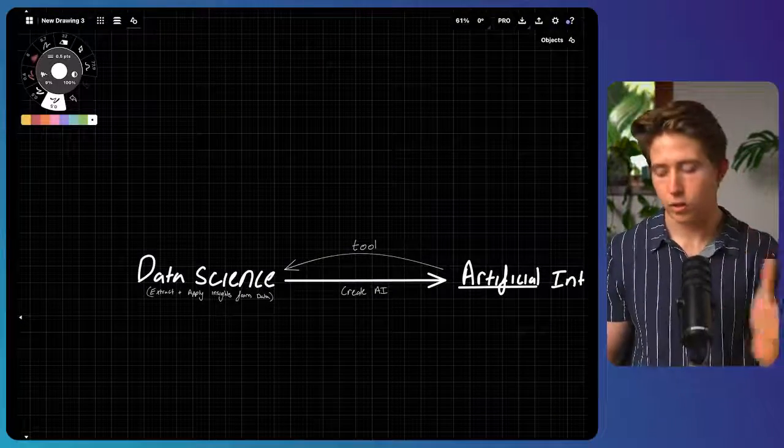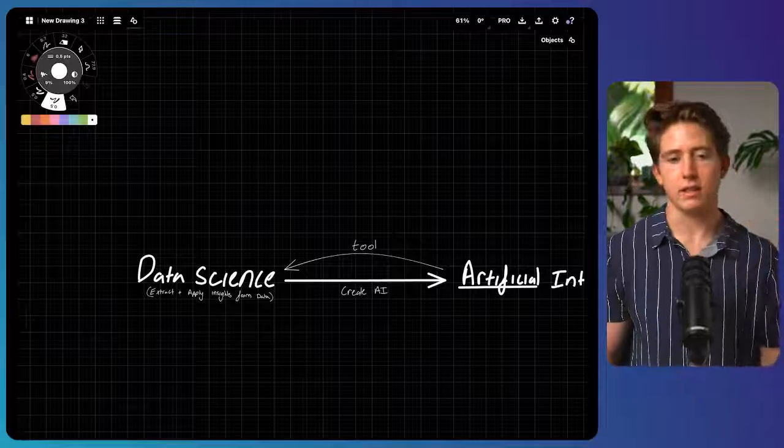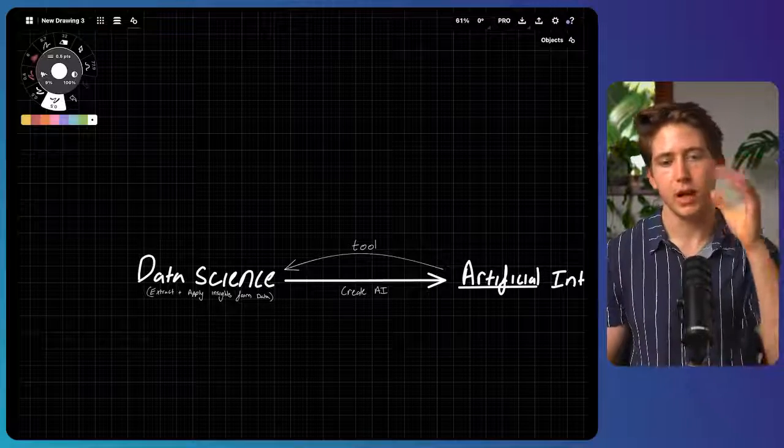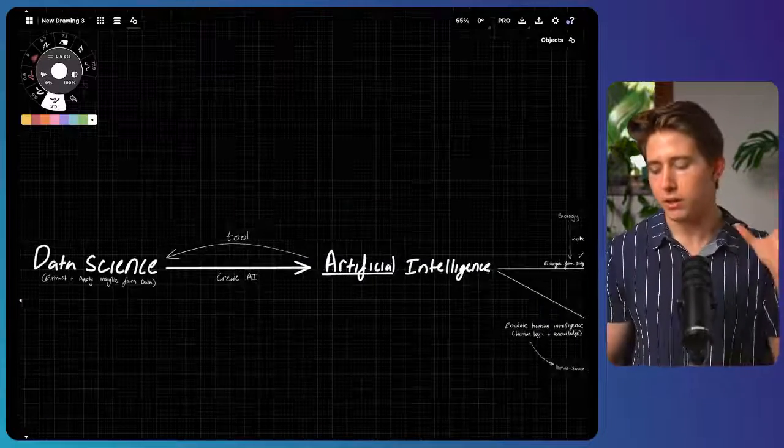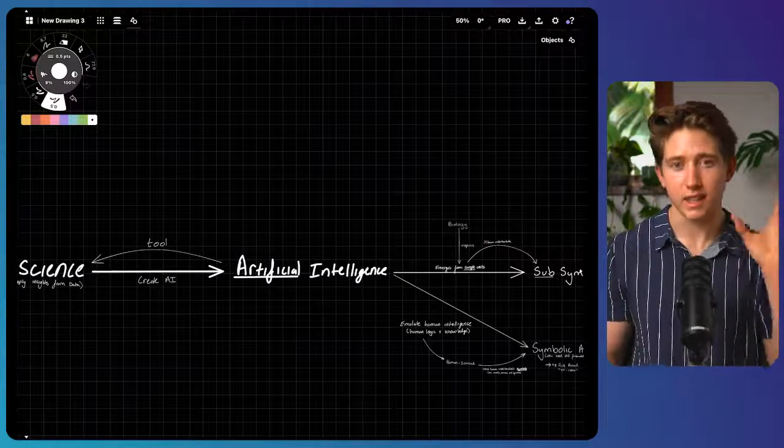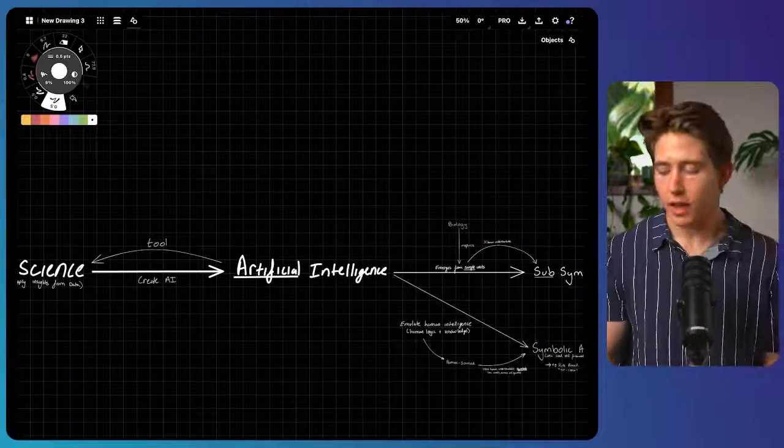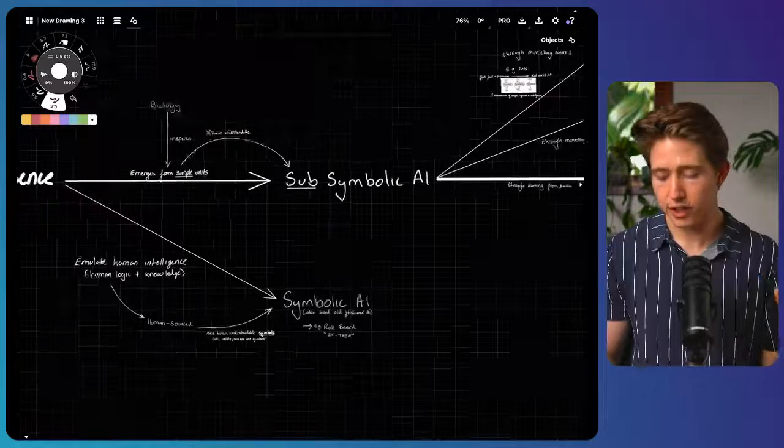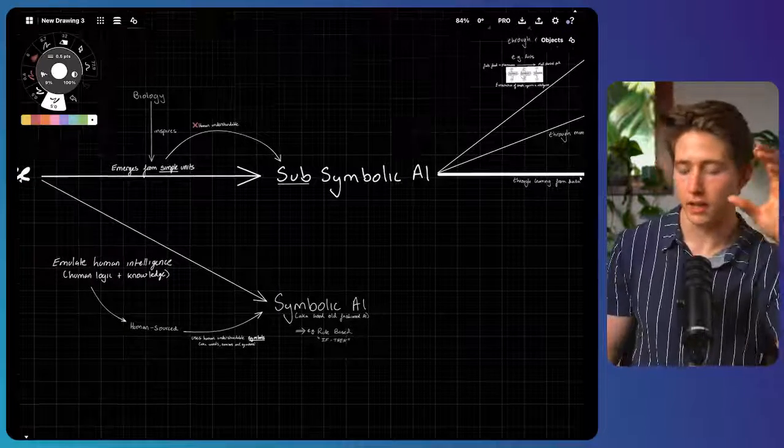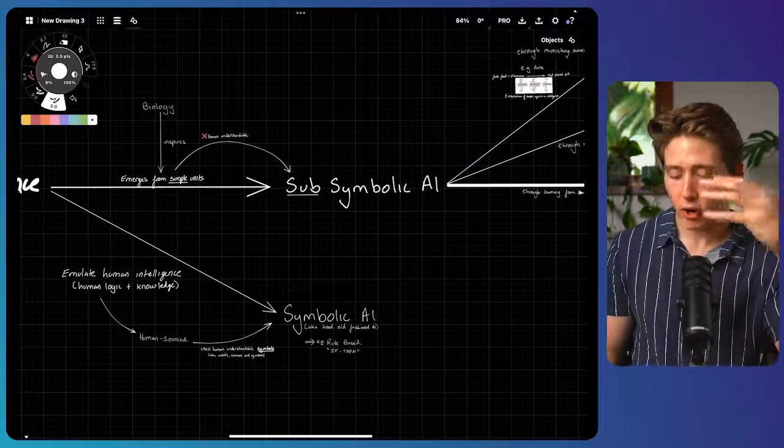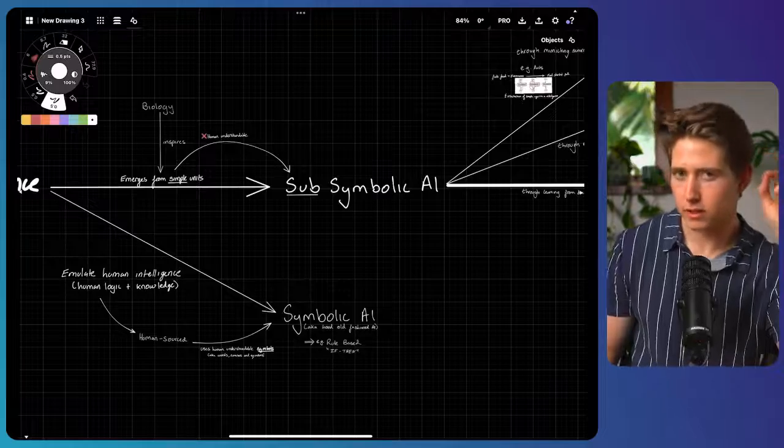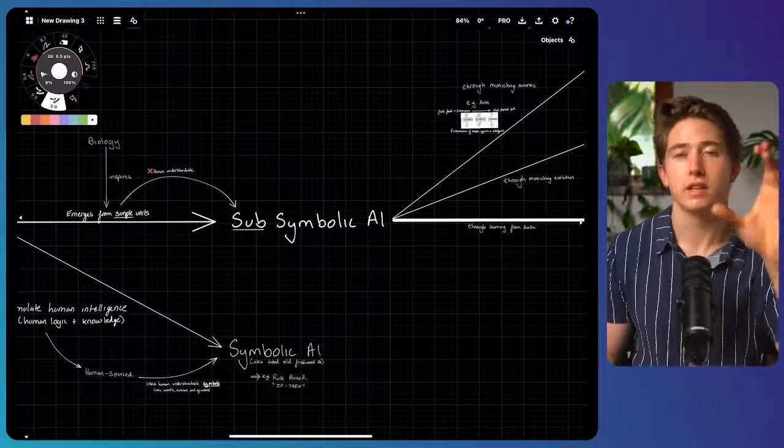And to summarize that, we can think of it as this core flow, where we start with data science, the science of extracting and applying insights from data. And then we can use that to create something that is intelligent artificially. And to make something that's intelligent artificially, you can either emulate human intelligence with symbolic AI, or emerge that intelligence from very simple subunits with sub-symbolic AI.